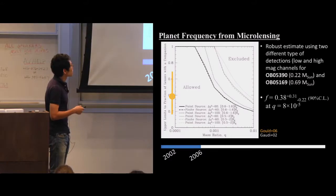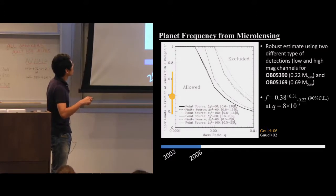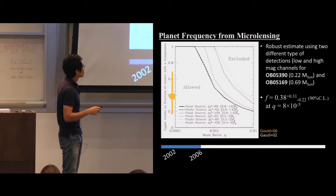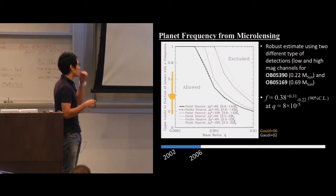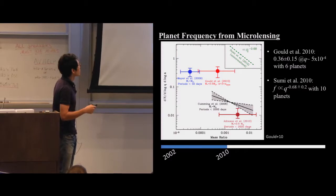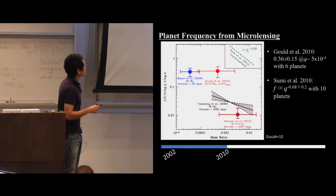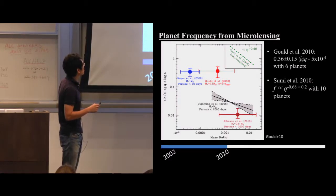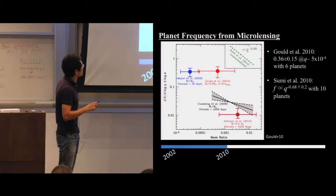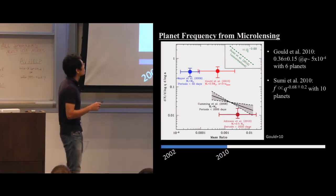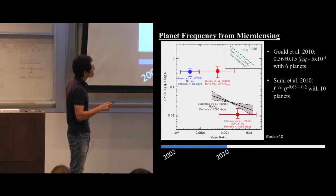Four years later, as Yossi mentioned, the Gould et al. paper estimated Neptune-mass planet frequency using just two detections — a rough but not robustly characterized estimate, as they did not calculate detection efficiency per event. The Gaudi et al. 2010 paper is probably the first well-characterized planet frequency from microlensing, showing a red point at mass ratio 5×10⁻⁴ (roughly Saturn mass) with a frequency of about 36%.